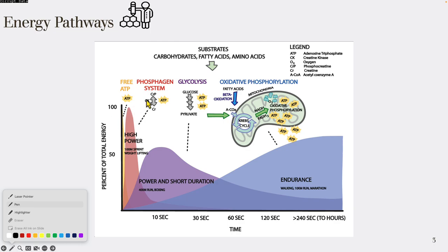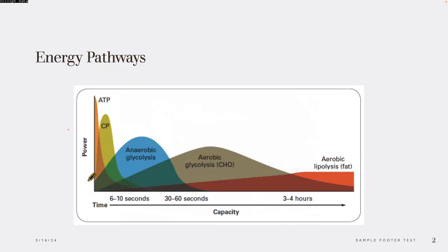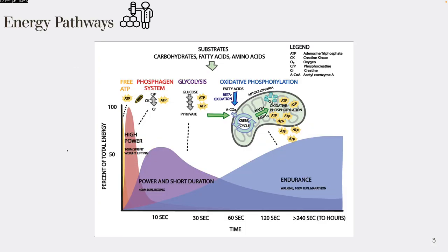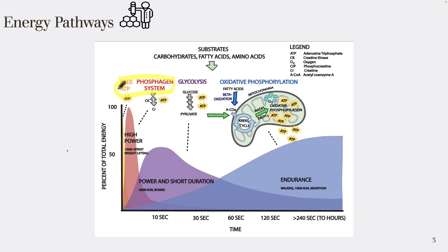Looking at the third system on this slide, let's recap. We have the ATP-phosphagen system — sometimes called the ATP-creatine system or creatine kinase pathway. There are many names, but just know we have free ATP and the phosphagen system. Neither of these uses oxygen. When we move into the next system, after we expend these two, the body has to keep making more ATP.